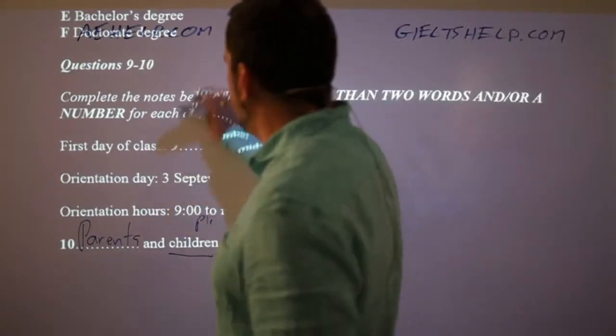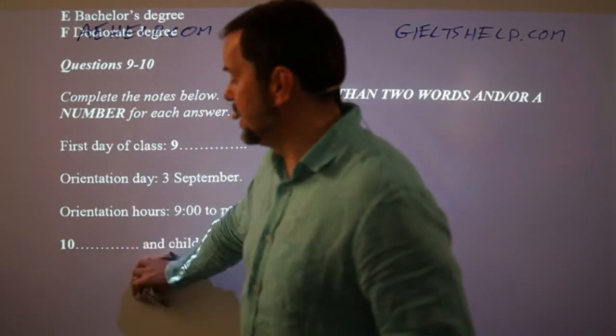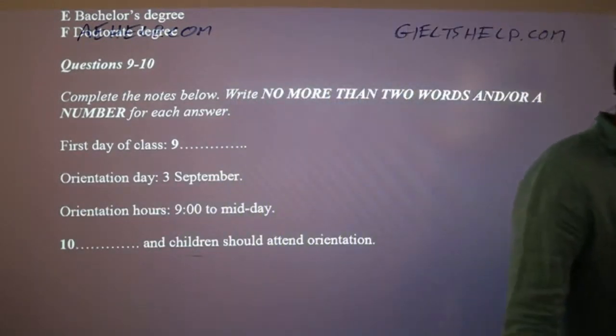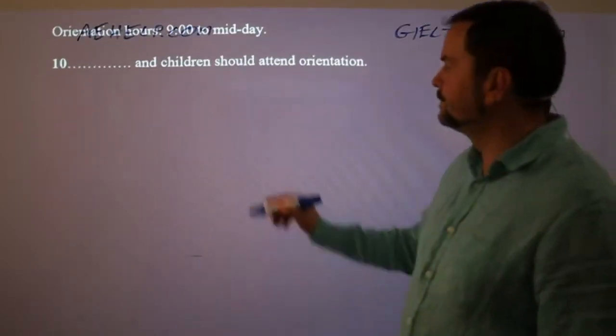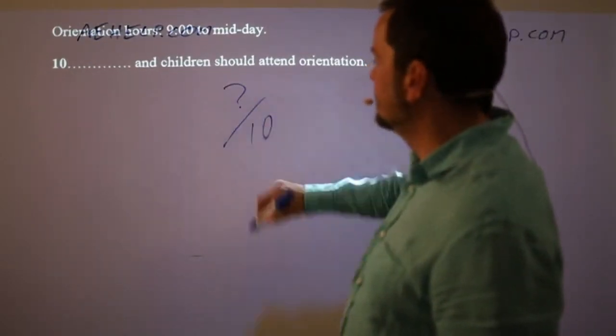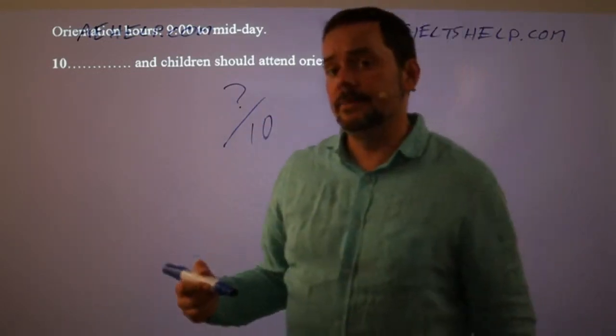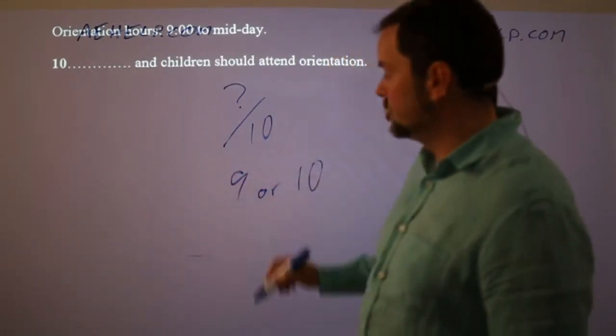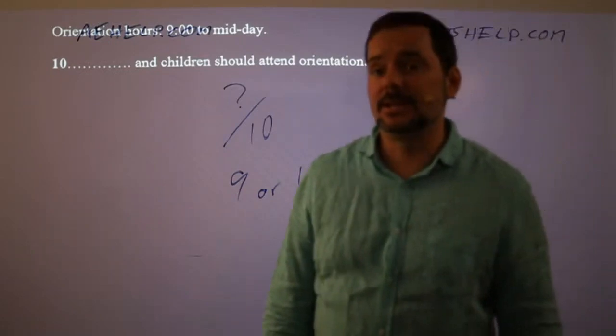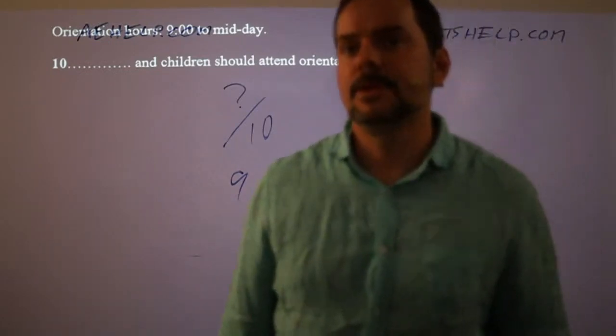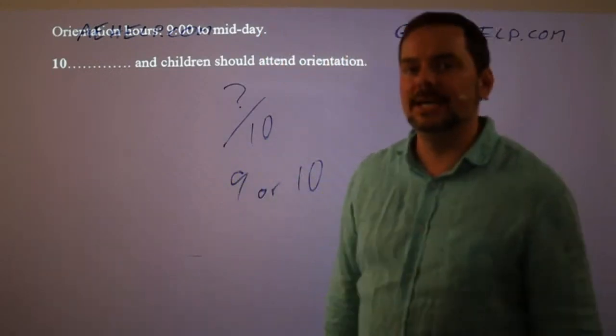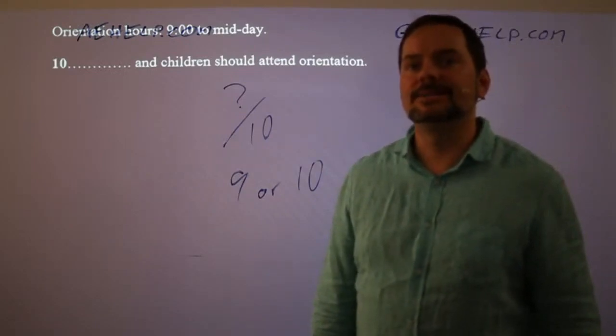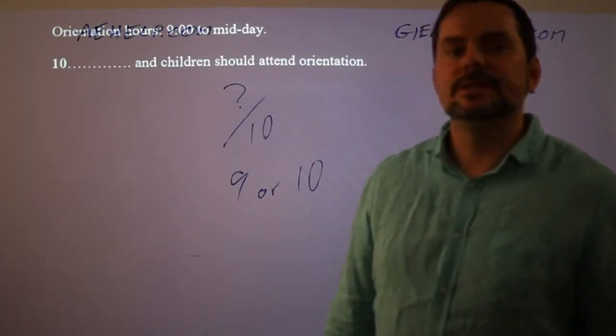How did you do? What did you get out of 10? Your goal in part one of the listening is to get 9 or 10. That should be your goal because it is the easiest part of the listening. Let's just jump right into part two.